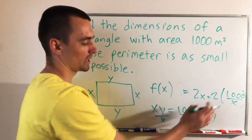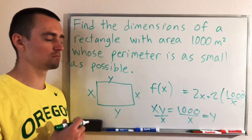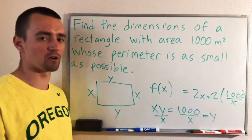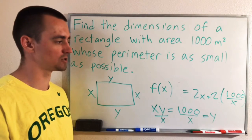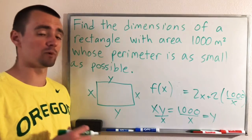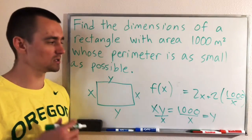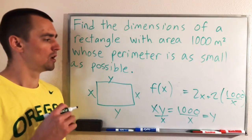And then now we have a single variable function. So it's just a function of X now. And we can now optimize this using, you know, typical single variable calculus optimization techniques, which basically just means we need to find the critical numbers and we can go from there.